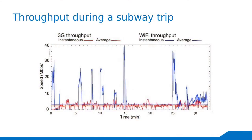Here we have a graph from experiments with a mobile device connected to the 3G network and also to Wi-Fi. We take a trip through the subway and at the stations we have access points. You can clearly see that when we reach a station, the blue lines go up — basically we have throughput through the Wi-Fi connectivity.